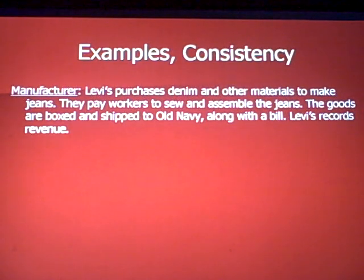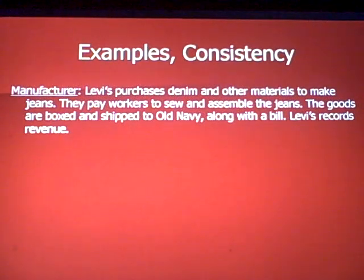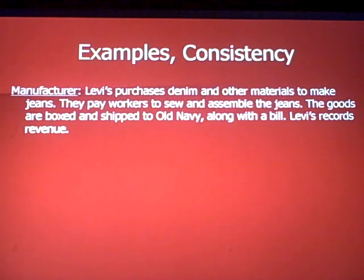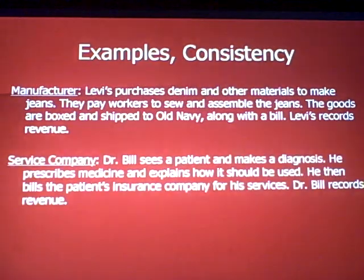For example, manufacturer Levi's purchases denim and other materials to make blue jeans. They pay workers to sew and assemble the jeans — that's a labor cost. The goods are boxed and shipped to Old Navy along with a bill. Levi's records revenue because they've done what they said they were going to do: they've delivered a product and handed somebody a bill.